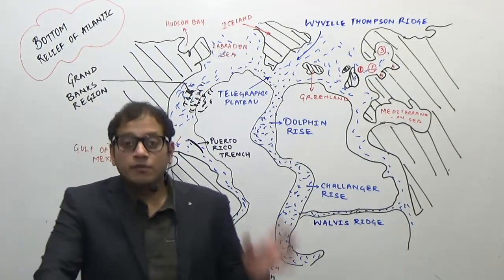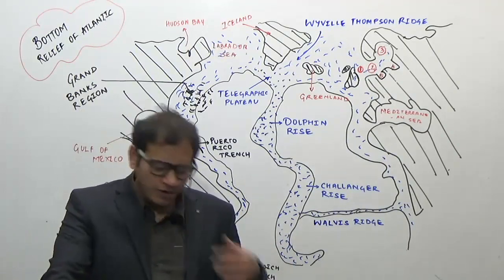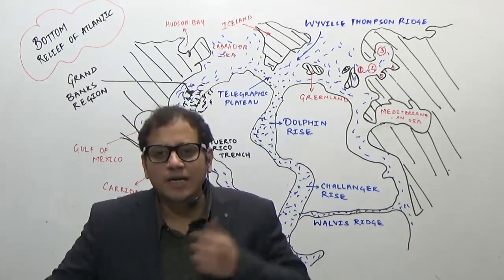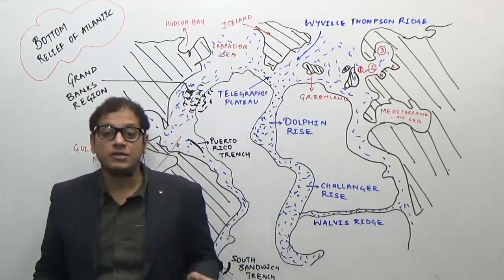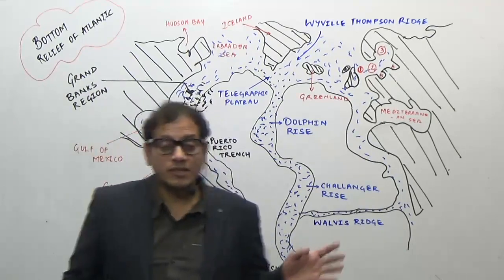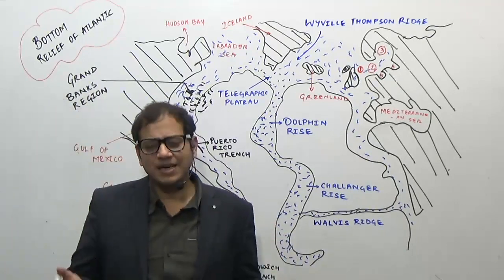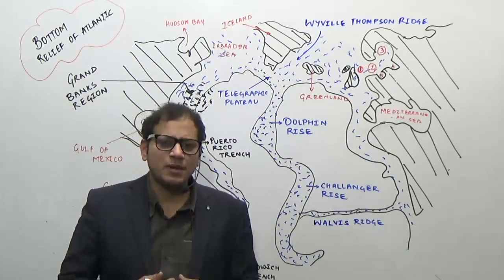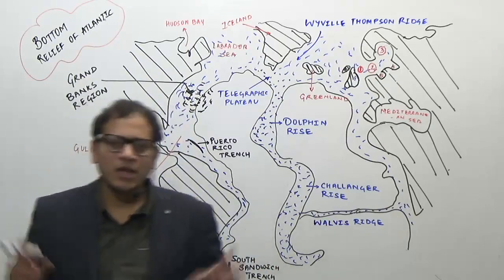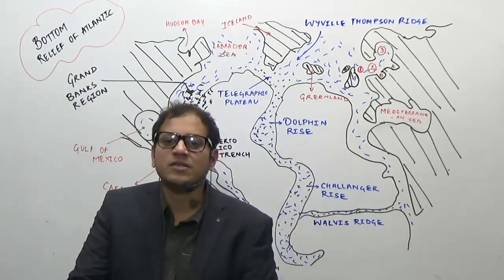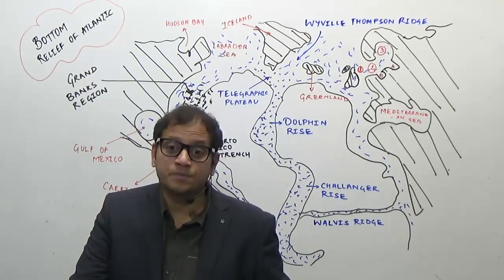Hi friends, we have studied the bottom relief features of oceans. We know the general idea of what consists of a continental shelf, continental ridge, continental slope, rise, and features of an abyssal plane such as mid-oceanic ridge. Now in the next three lectures, starting with this one, we will study the bottom relief of each ocean.